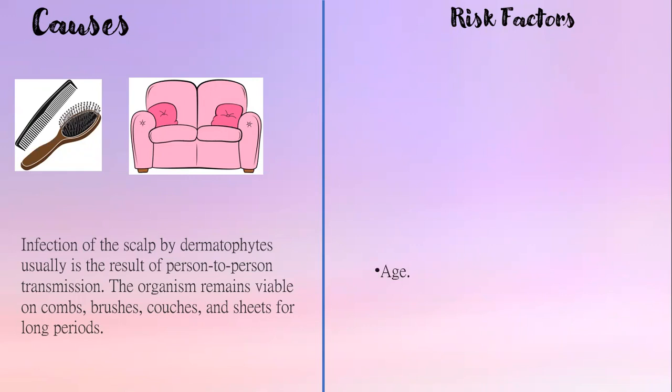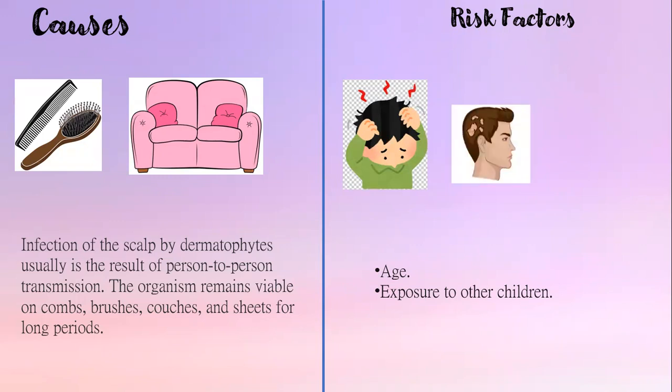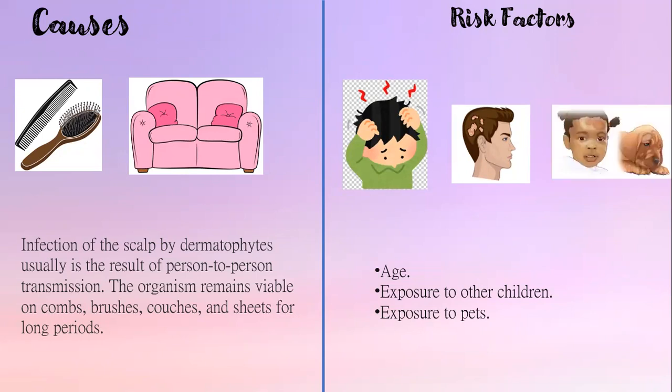Risk factors for tinea capitis include age, because ringworm of the scalp is most common in toddlers and school-age children. Exposure to other children, because outbreaks are common in schools and child care centers where the infection easily spreads through close physical contact. And exposure to pets, because a cat or dog can have the infection without showing any signs, and children can get it by touching or petting the animal.